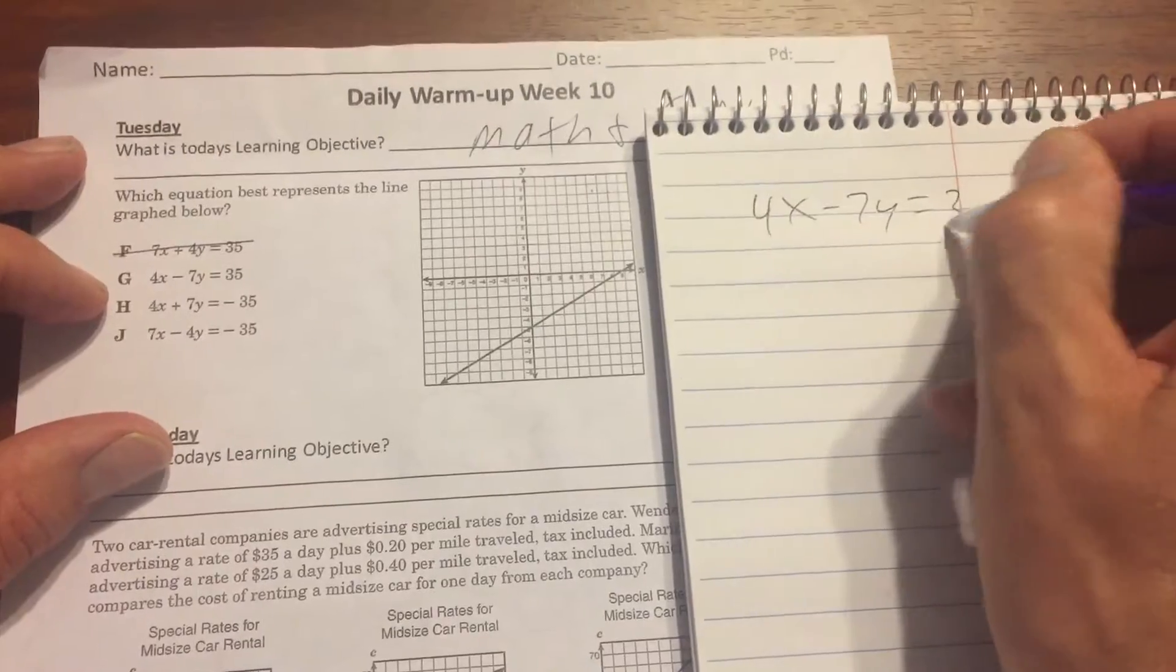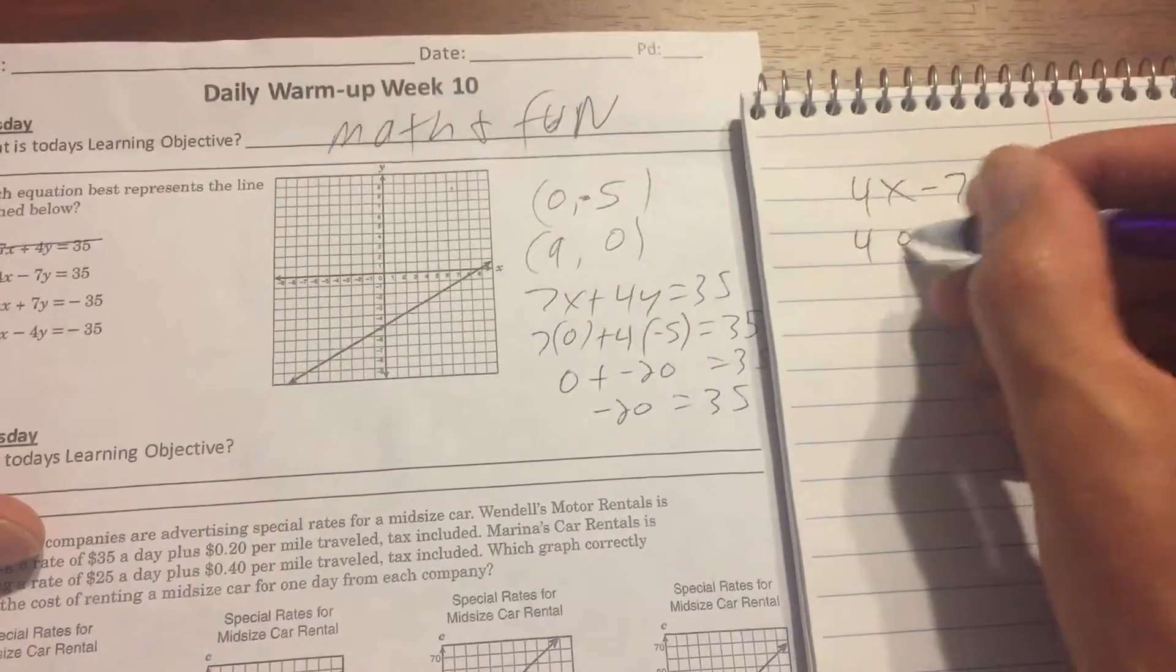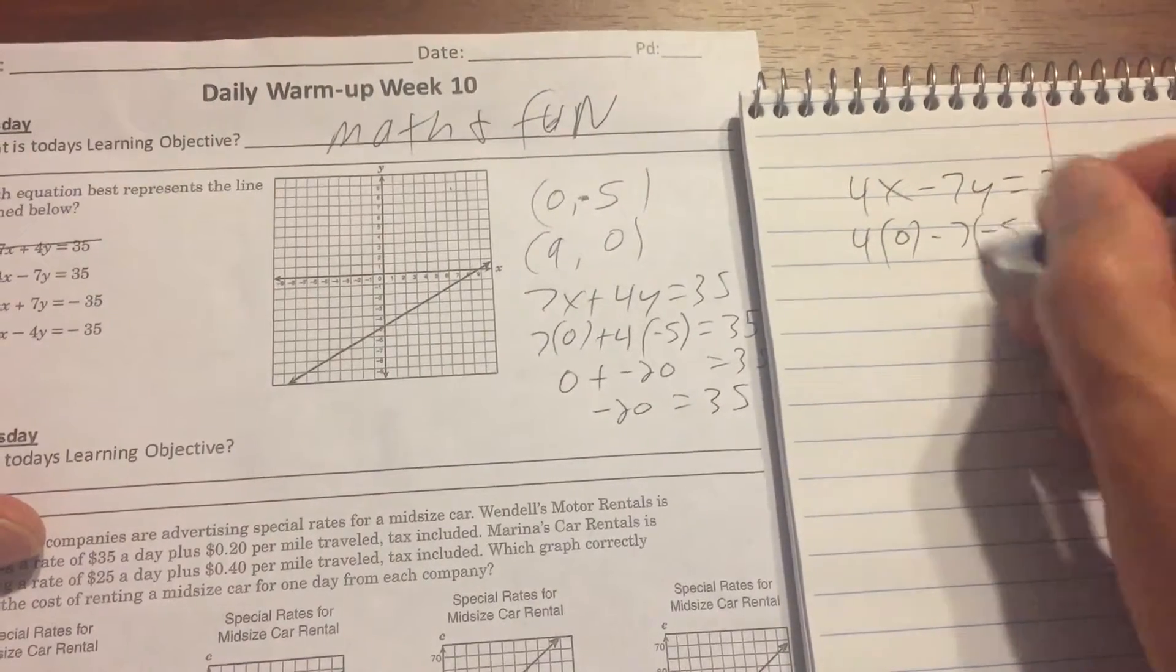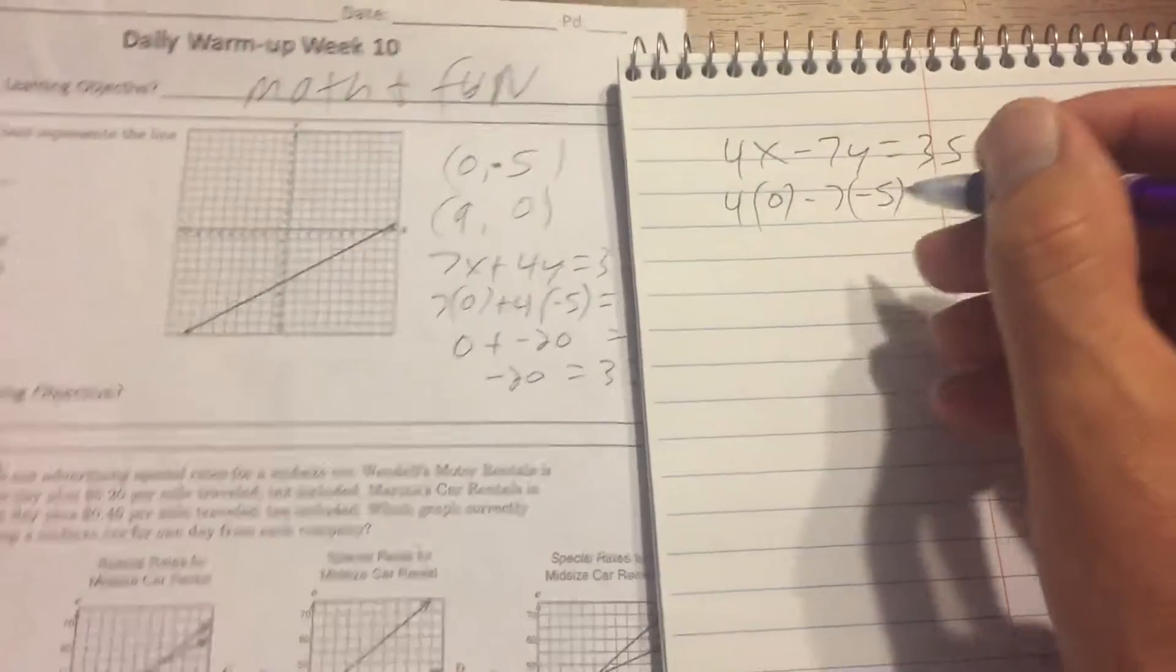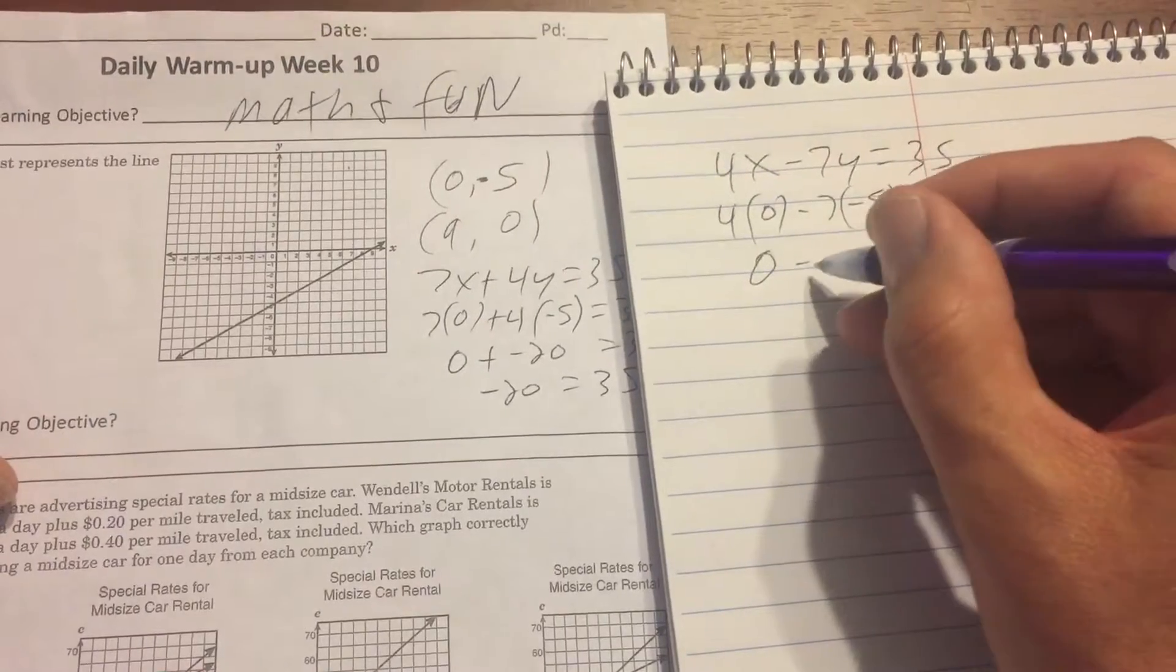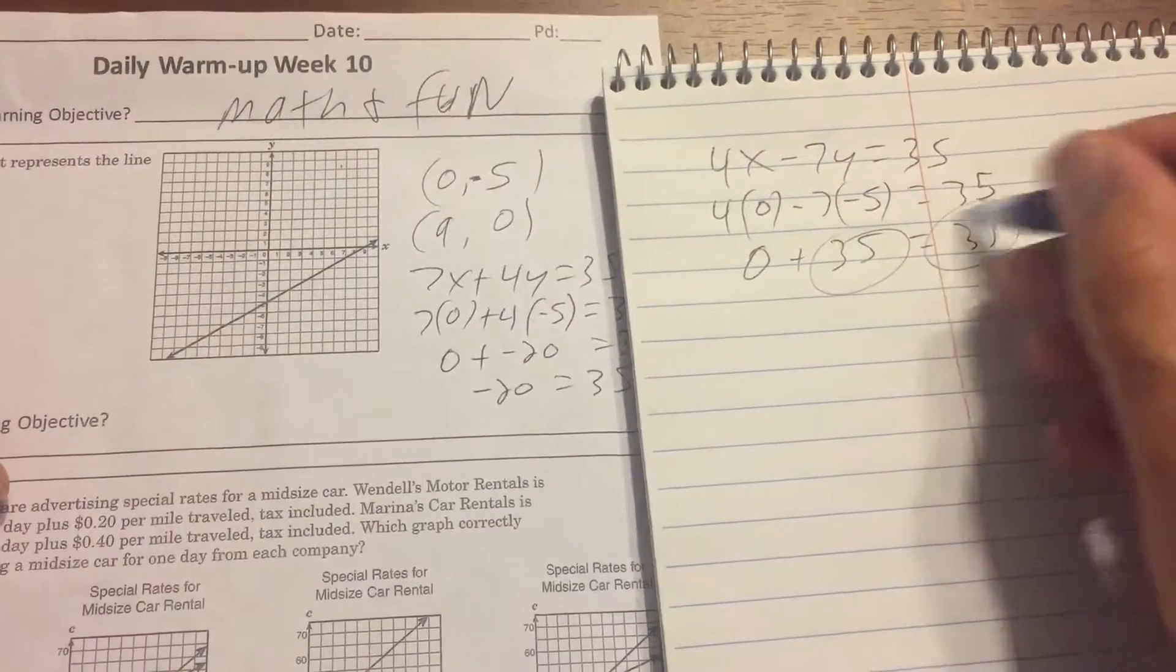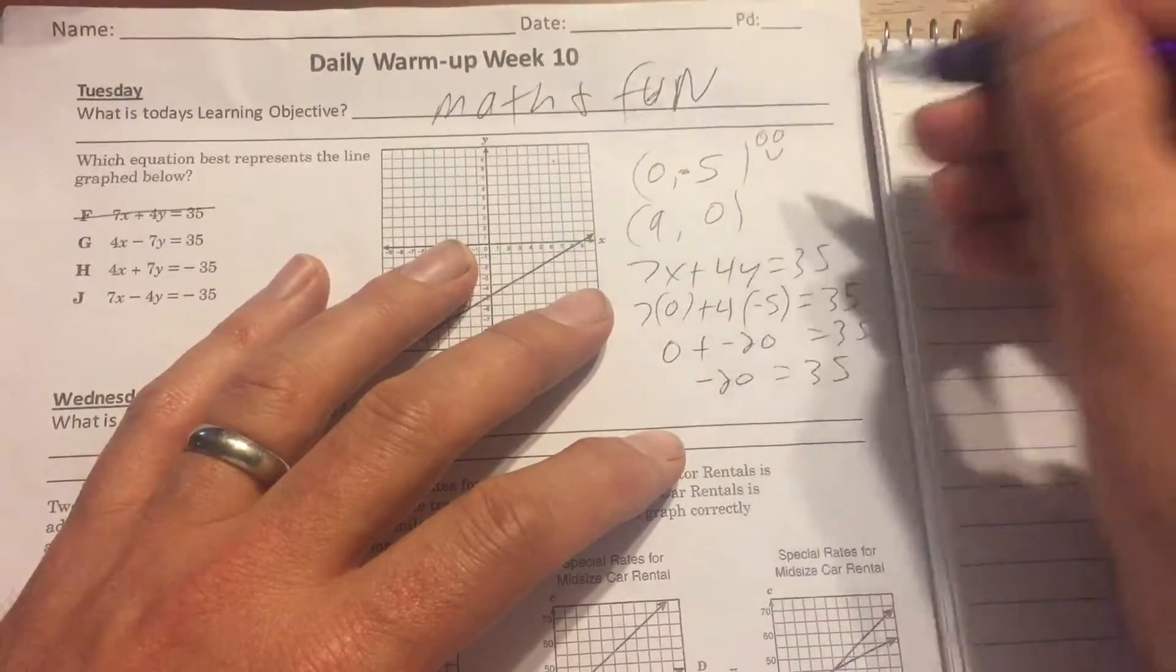Let's do the next one. 4x minus 7y is equal to 35. Let's go ahead and solve that. So this is going to be 4, you put a zero in here minus 7, and then y is going to be negative 5 is equal to 35. So this here is going to be zero. And this is going to turn into two negatives and make a positive. It's going to be plus 35 is equal to 35. Does 35 match 35? Yes, it does. So we're going to put a smiley face right here because we're good.